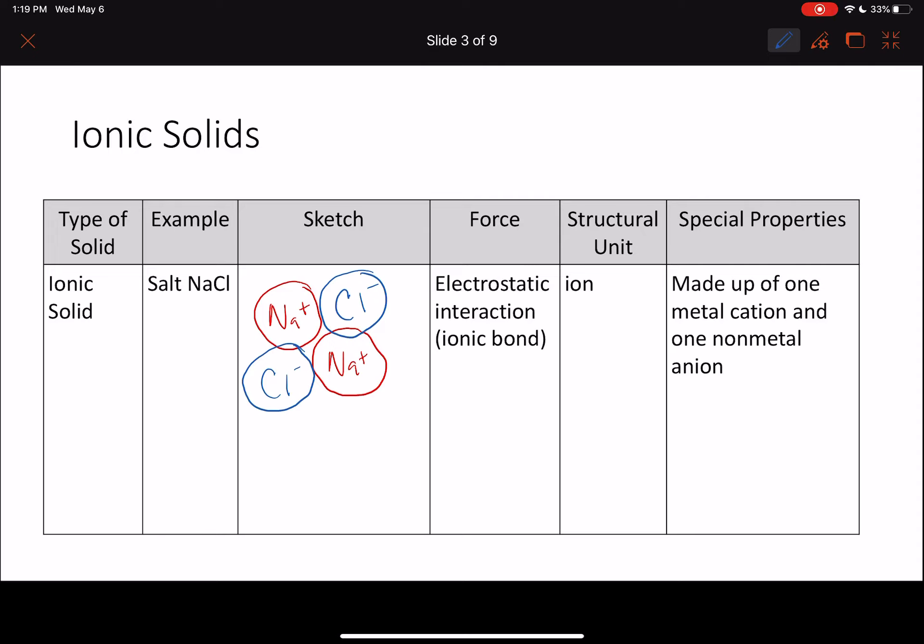The smallest unit of an ionic solid is an ion. That one Cl is one ion right there. Some special properties of ionic solids, which you already know, is that it is made up of a metal cation with a non-metal anion. In sodium chloride, we know sodium is a metal, we know chlorine is a non-metal, so we know this is an ionic solid.